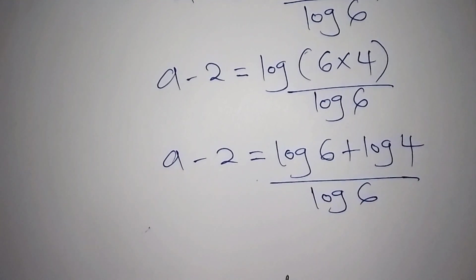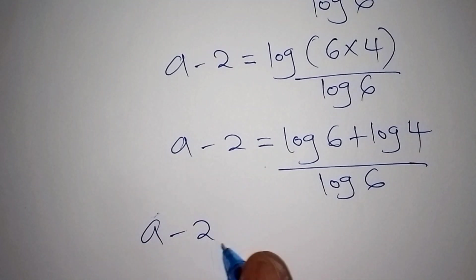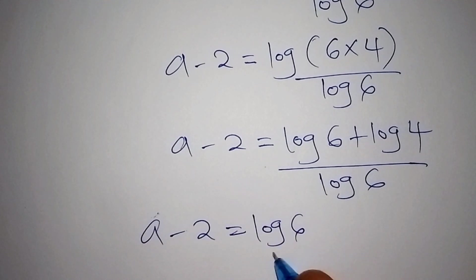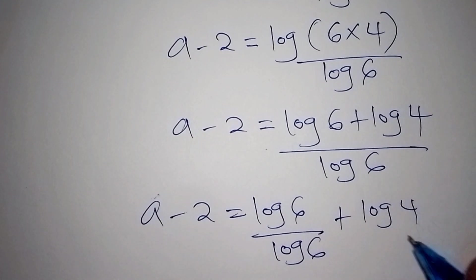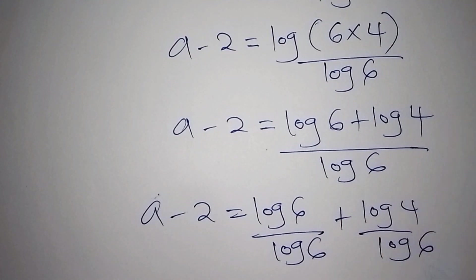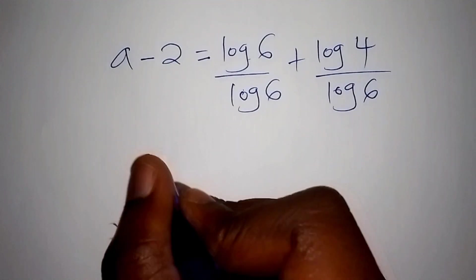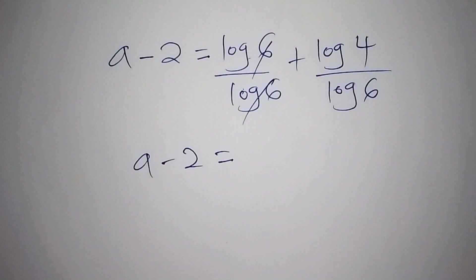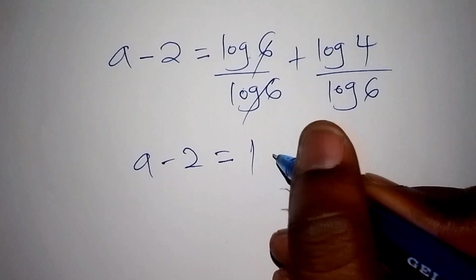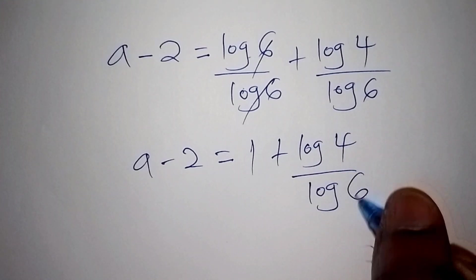Now we split this equation: a minus 2 is equals to log 6 all over log 6, plus log 4 all over log 6. The log 6 and log 6 cancel out, so we have 1 plus log 4 all over log 6.